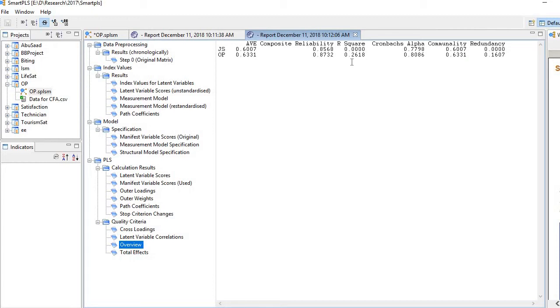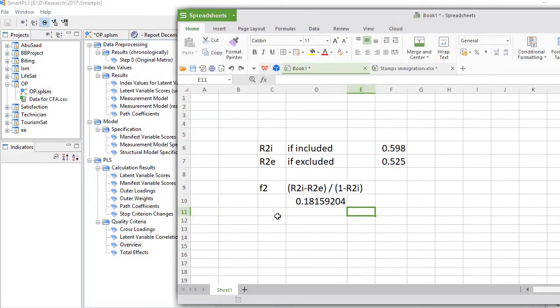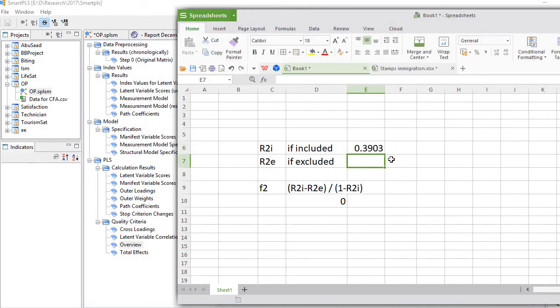Now let's calculate f-square in Excel. So here are these values. You see this is R-square if included, that is 0.3903. And here it is if excluded, then what is R-square? It is 0.2618.